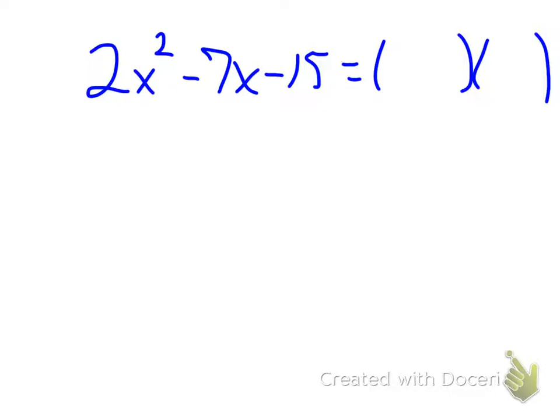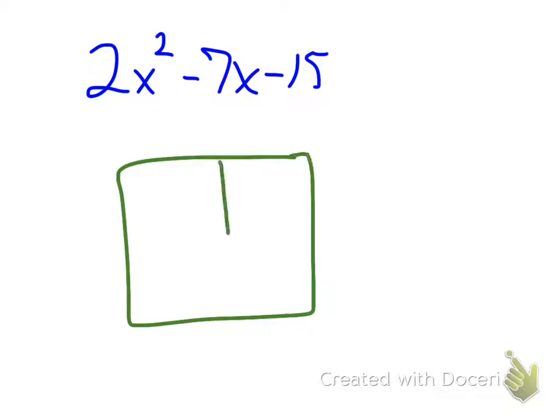So I first of all want to go back to my generic rectangle. When we did the generic rectangle before, my x squared term, whichever that was, I always put in the same box. It was always right here. So that is 2x squared.